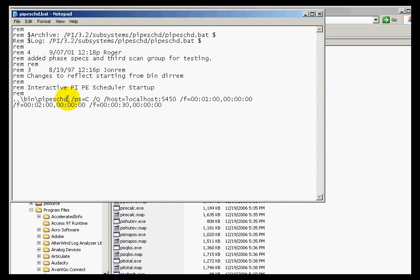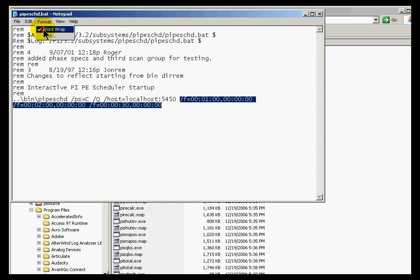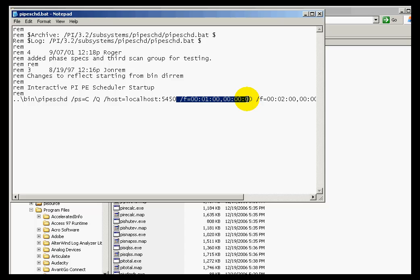We specify the host where we're sending data, and then we specify the scan classes. Let me get rid of Word Wrap. Here we go.